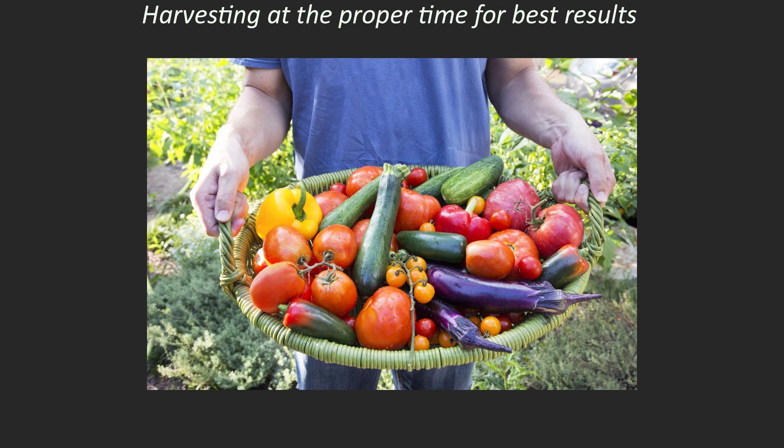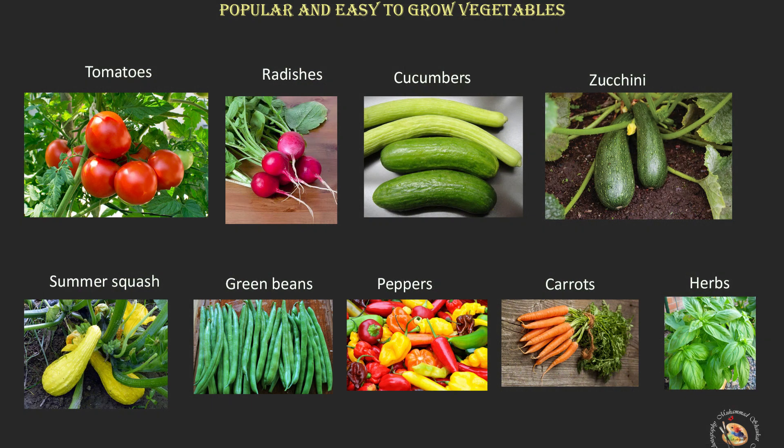As a beginner gardener, it's best to start with vegetables that are relatively easy to grow and maintain. Here are some vegetables that are well-suited for beginners: tomatoes, lettuce, radishes, cucumbers, zucchini, green beans, carrots, and herbs.